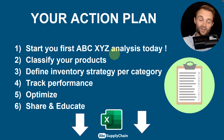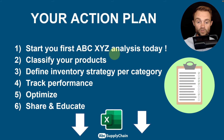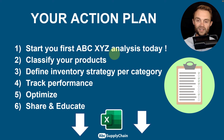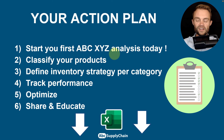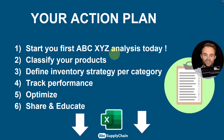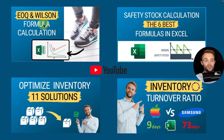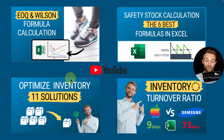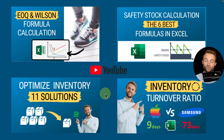Your action plan: start your first ABC XYZ analysis today. Classify your products, define your inventory strategy per category, track your performance — check my previous videos for service and inventory KPIs — and then optimize. Don't forget to share and educate your teams. As supply chain professionals, our main goal is to find balance — not just push for more inventory, more sales, or more profit — but to find balance and peace in the supply chain world.